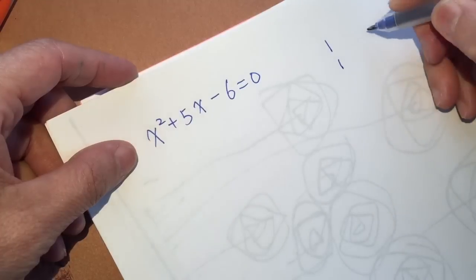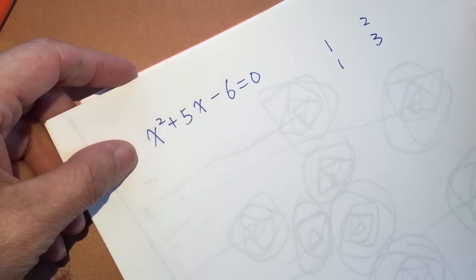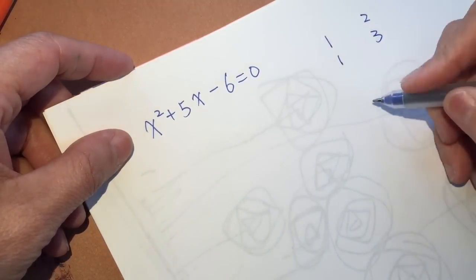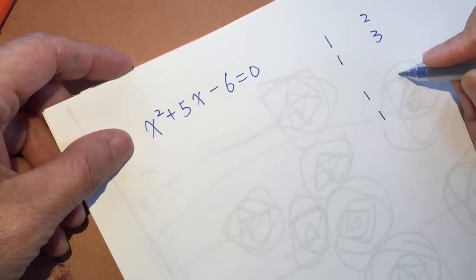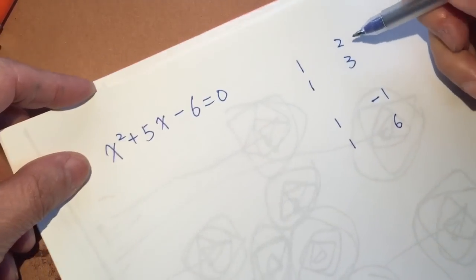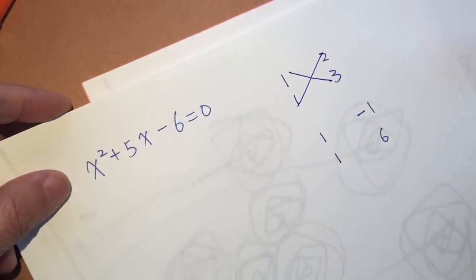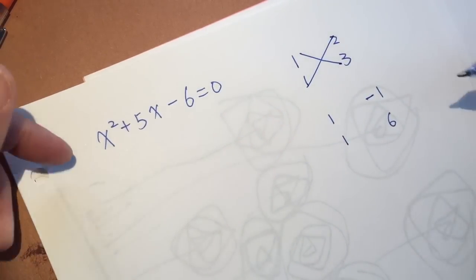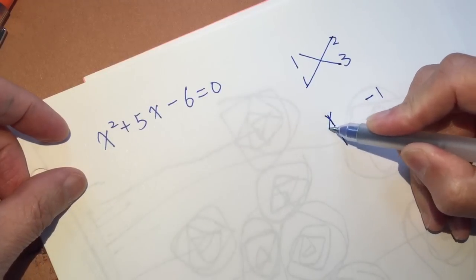一,一,二,三, oh, no. 一,一,负一,正六, okay? The first one does not work for this. So what I do, I can change it into x, it's easier.